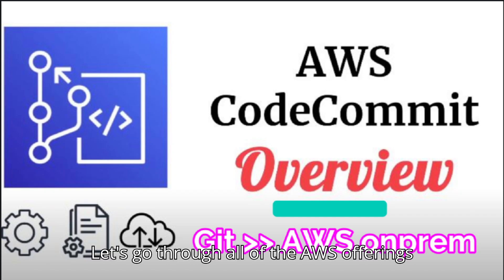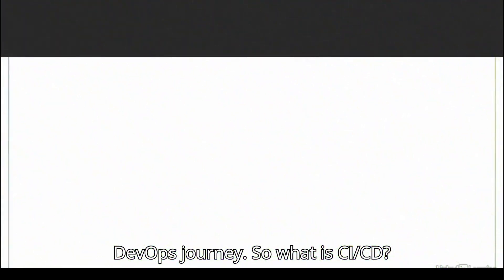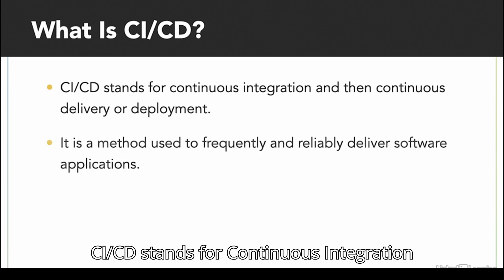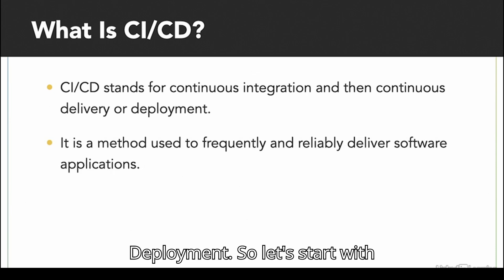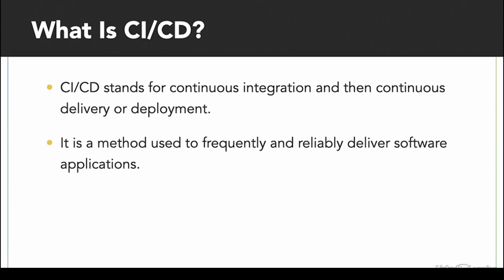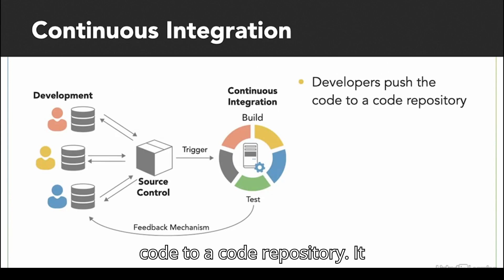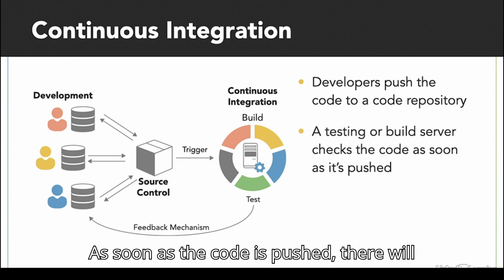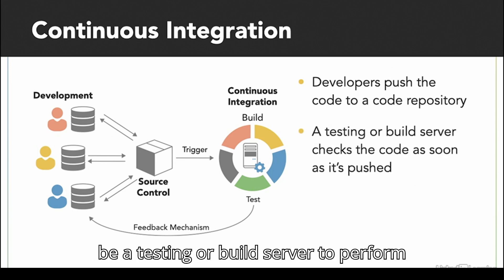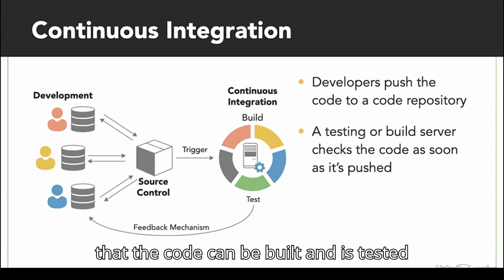Let's go through all of the AWS offerings to implement CI/CD as part of the DevOps journey. CI/CD stands for Continuous Integration and Continuous Delivery or Deployment. Starting with Continuous Integration: the developer pushes code to a code repository — it could be GitHub, CodeCommit, or Bitbucket. As soon as the code is pushed, a testing or build server performs checks on the code to ensure it can be built and tested correctly.